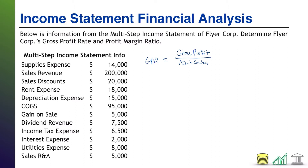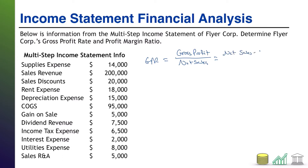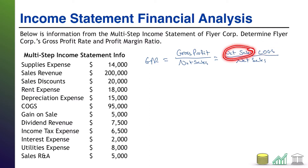What this is essentially going to tell you about the company is, once you account for the cost of sales — because gross profit itself equals net sales minus cost of goods sold, all over net sales — what this is telling you is after you take out your cost of sales, how much of that sales revenue are you able to keep as a fraction of the total sales revenue?